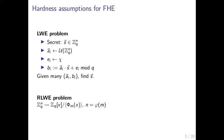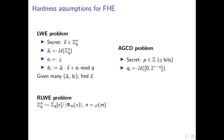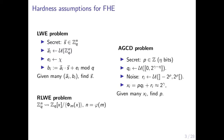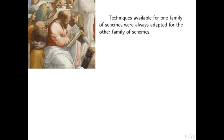For the AGCD problem, the secret is just an integer p. We sample uniform integer elements and noise terms, multiply the uniform element by the secret, and add the noise. This x_i is what we call an AGCD sample. Given many of these AGCD samples, we have to find p.